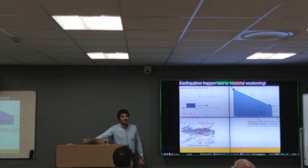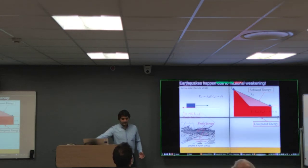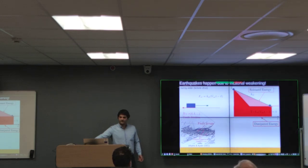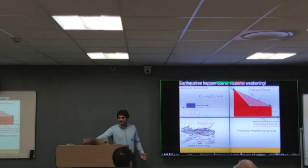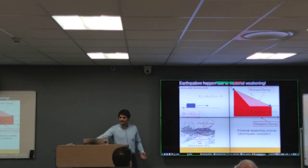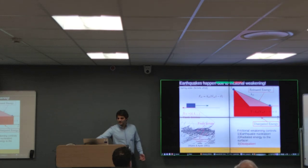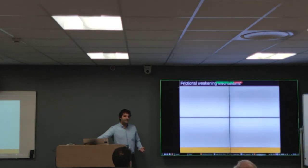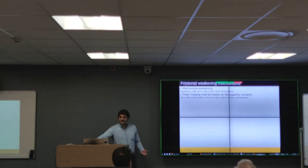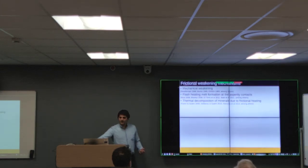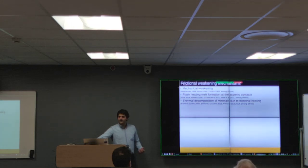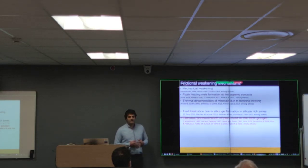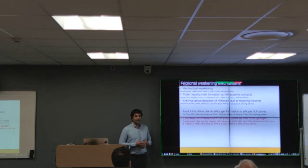In this case, the elastic energy of the block is transformed into the released energy that radiates to the surface, and the dissipated energy that dissipates inside the fault core. Thus, frictional weakening controls both earthquake nucleation, the radiated energy to the surface, and dissipation. There are different frictional weakening mechanisms, including mechanical weakening, flash heating, thermal decomposition of minerals, and — most importantly for this presentation — thermal pressurization of pore fluid at the fault core.